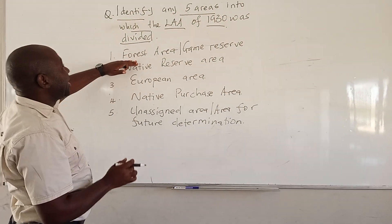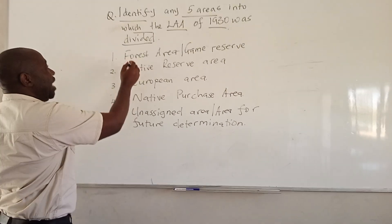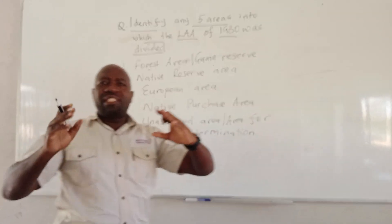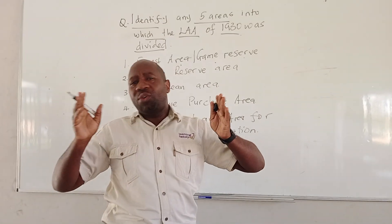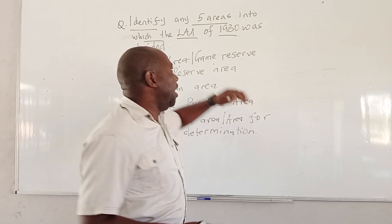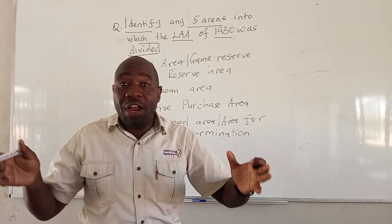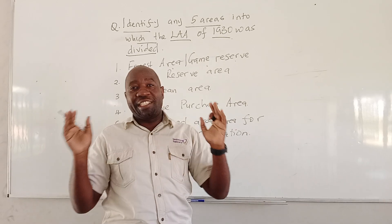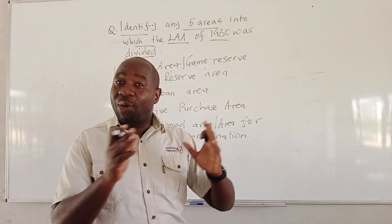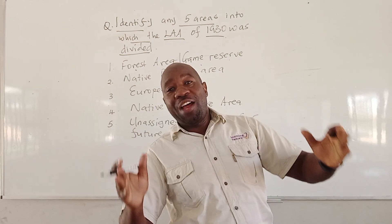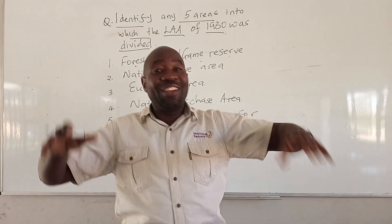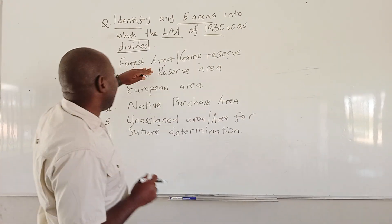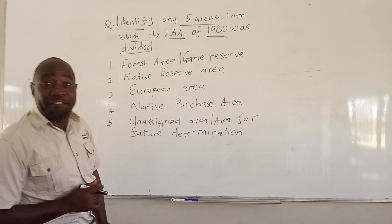Number one, there was land known as the Forest and Game Reserve Area. It was land that was only reserved for forestry and for wild animals. That land was not supposed to be touched. It was reserved for forestry and also for wild animals — the elephants, the lions — they were supposed to enjoy being in that reserved area.